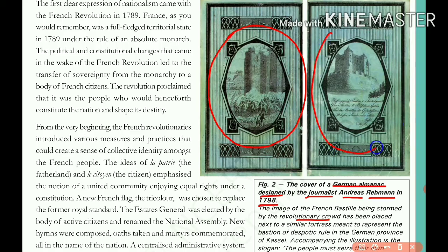The next cover represents despotic rule. This is a fort — a castle in a German city. It represents king rule. The German language caption conveys that the people must seize their own freedom. People are taking their own freedom.